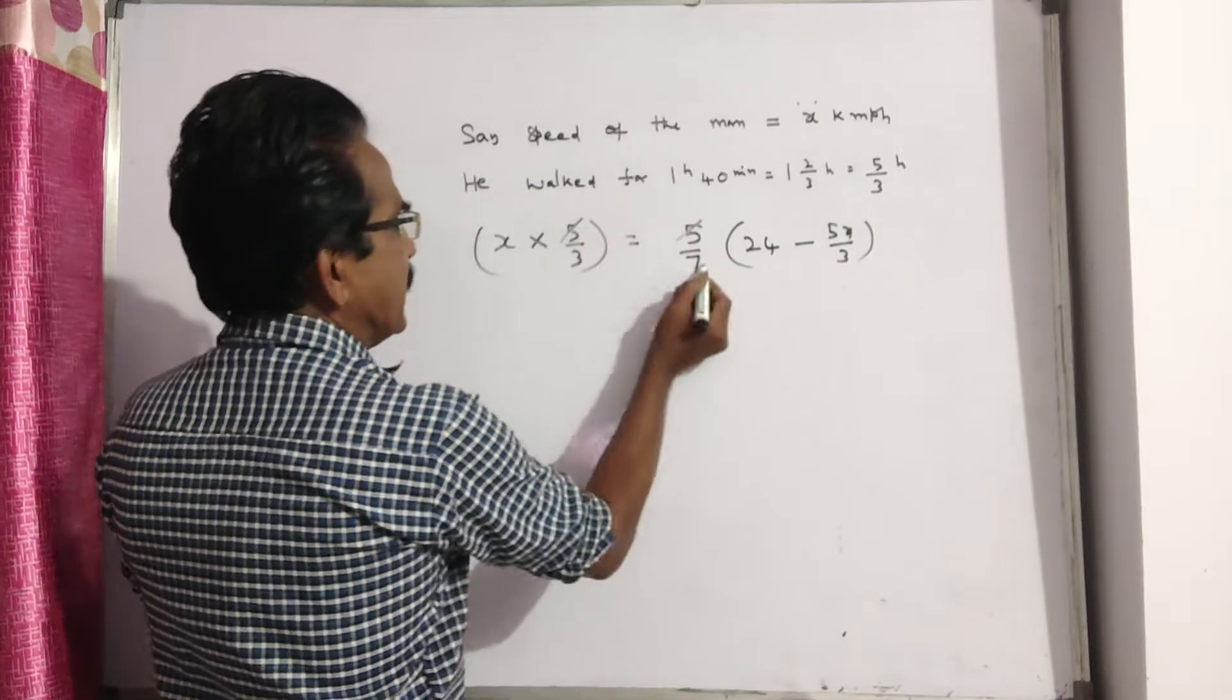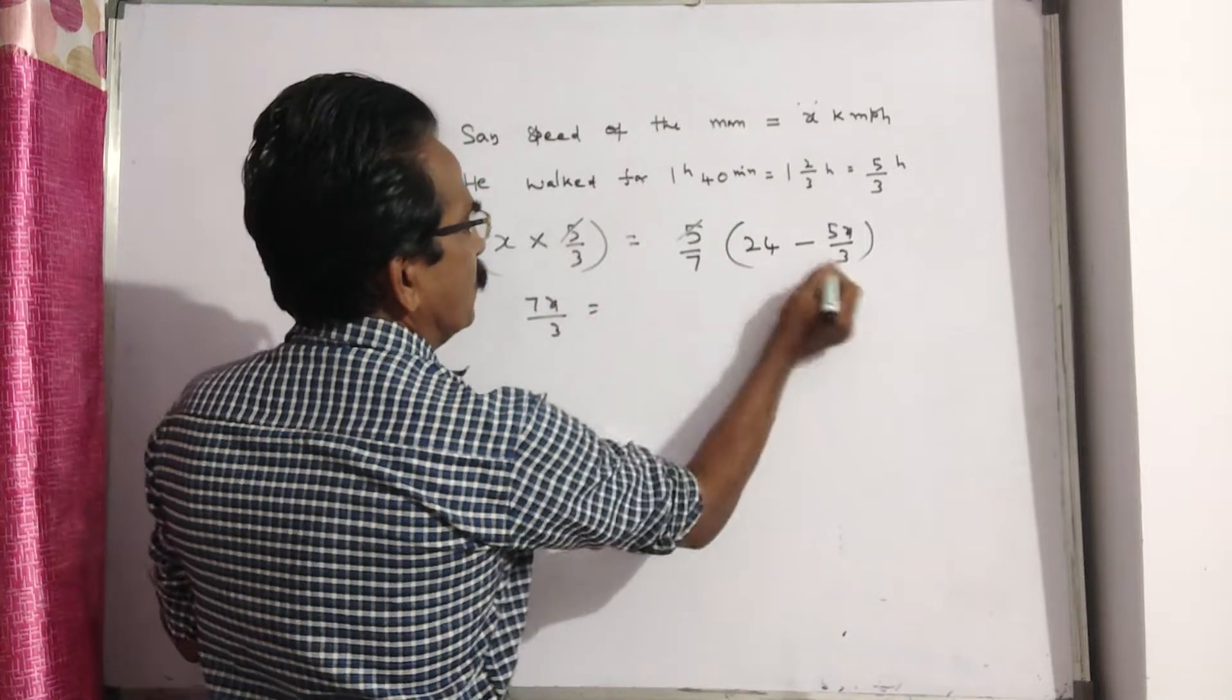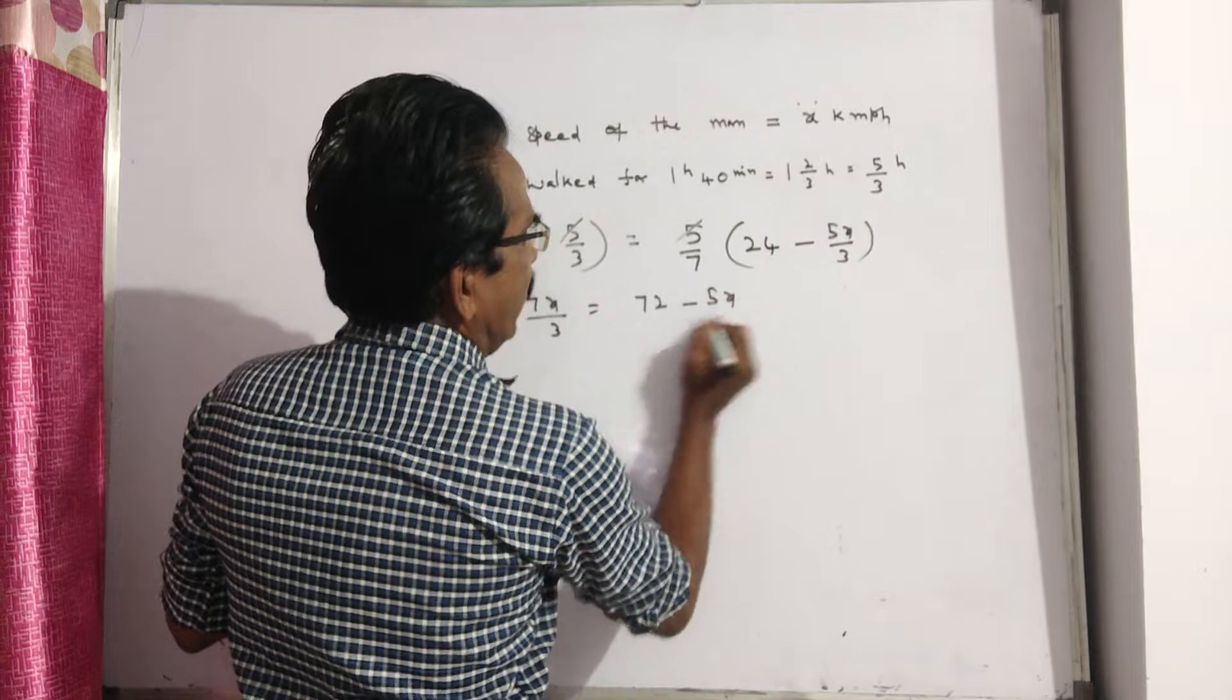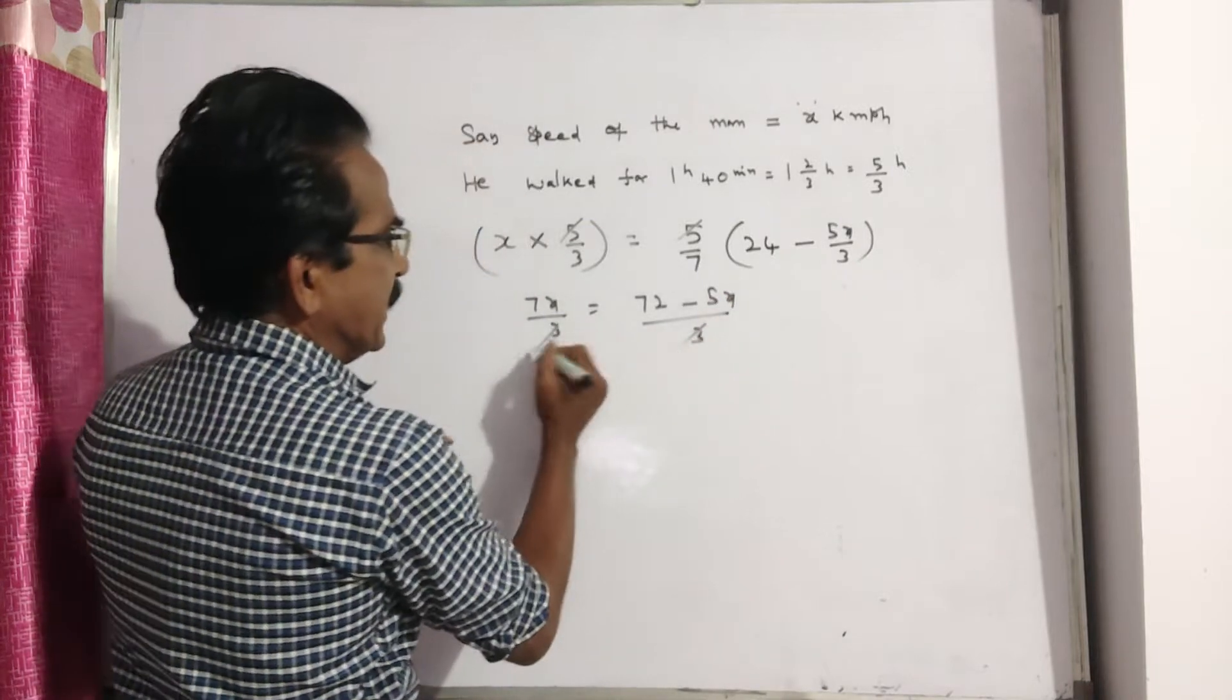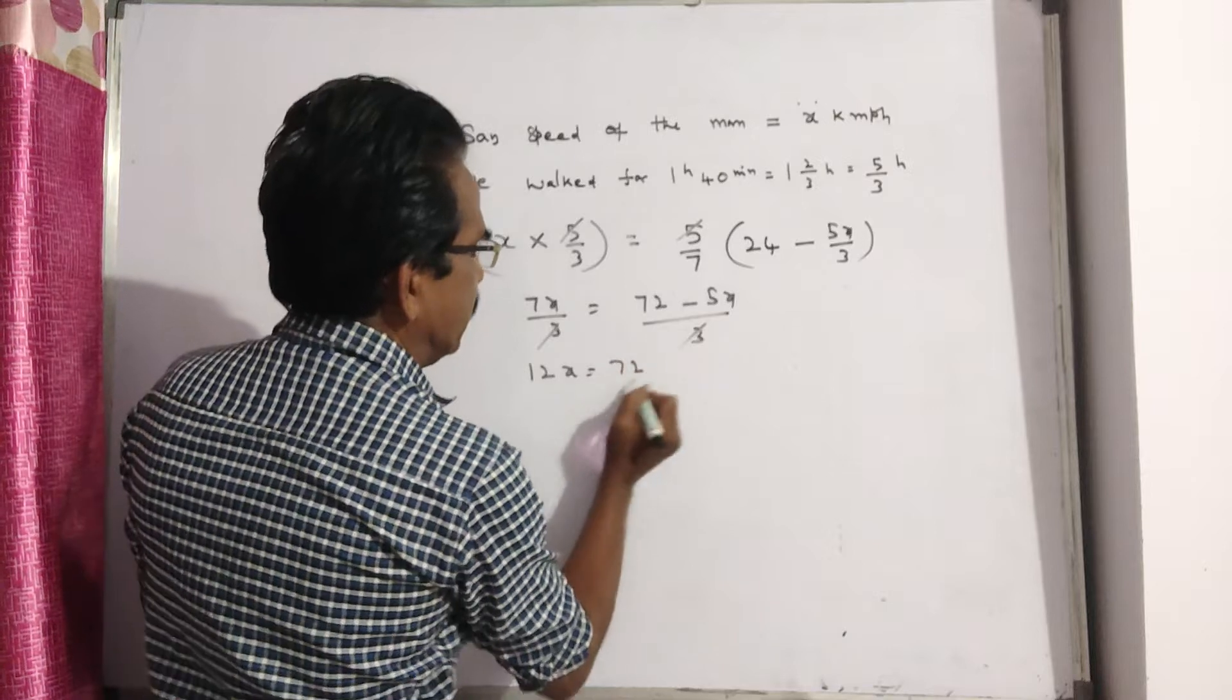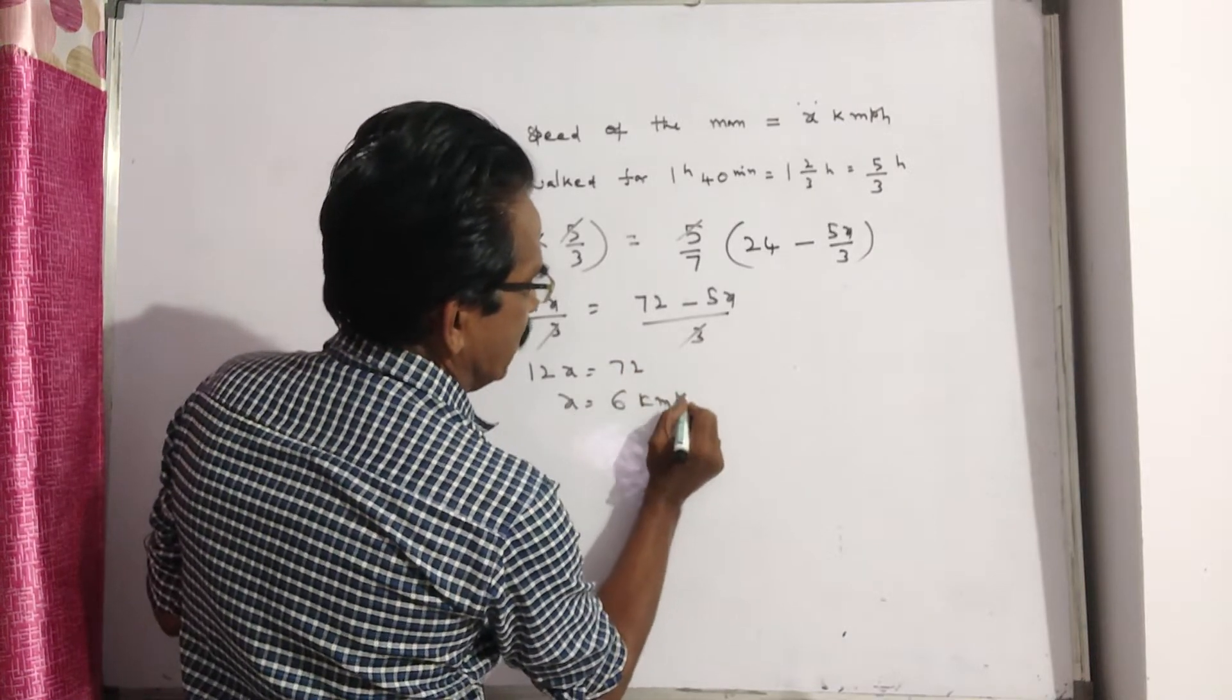Now, 5 by 7 of the remaining distance: 5 gets cancelled. 7x by 3 is equal to 72 minus 5x by 3. 3 gets cancelled, so 12x is equal to 72. x is equal to 6 kmph.